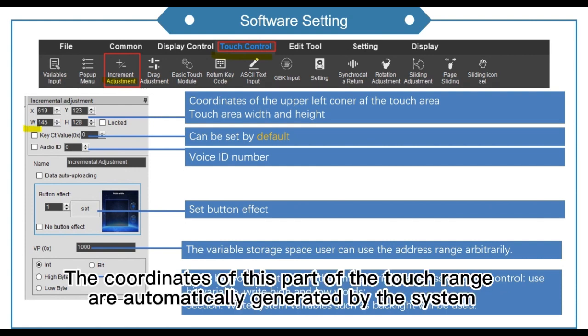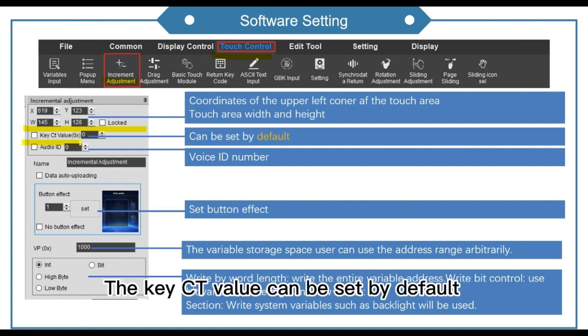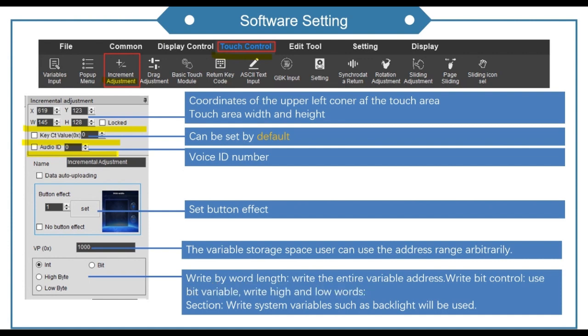The coordinates of this part of the touch range are automatically generated by the system. The key city value can be set by default. Here we choose to set the voice ID number.